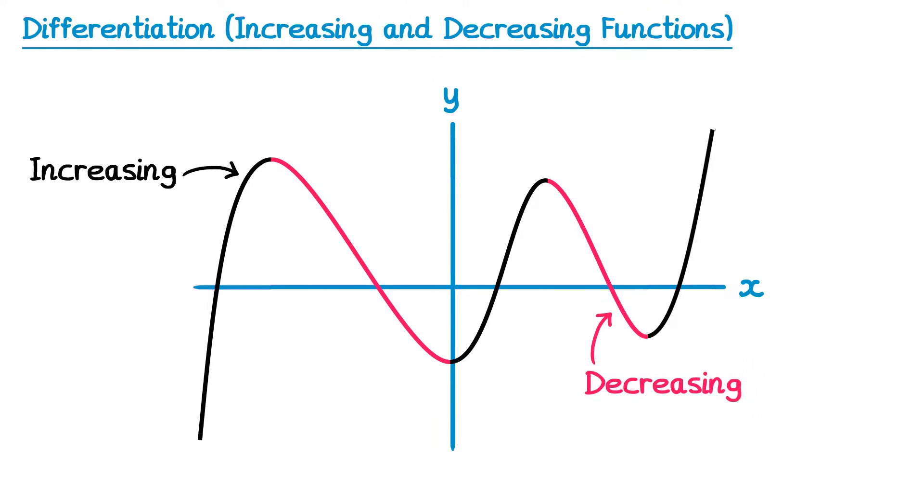If we draw a tangent in one of the black sections it will always be sloping upwards, therefore it has a positive gradient. If it has a positive gradient then the gradient function, dy/dx, must be positive as well, so it must be greater than zero.